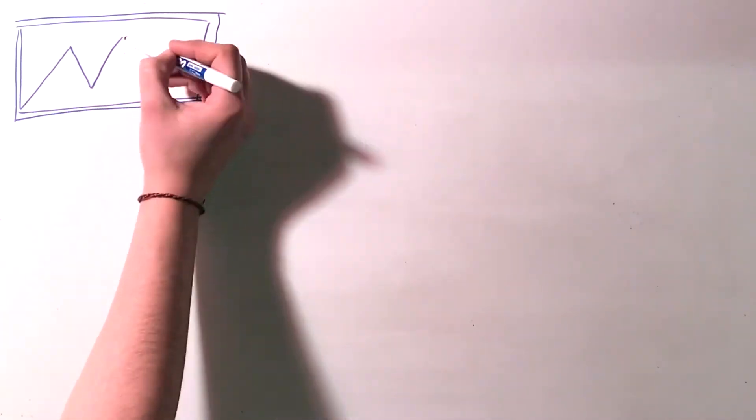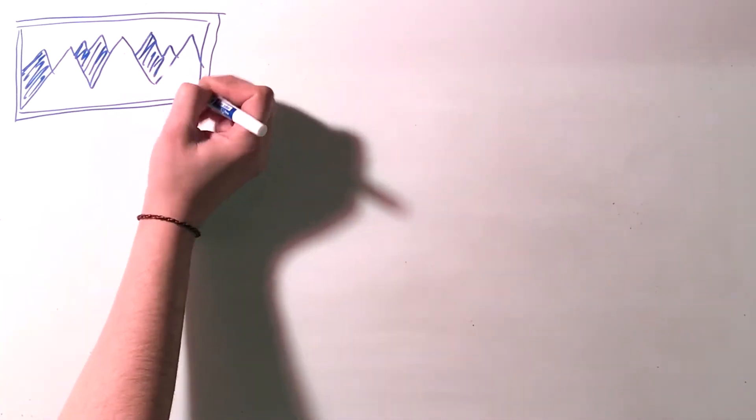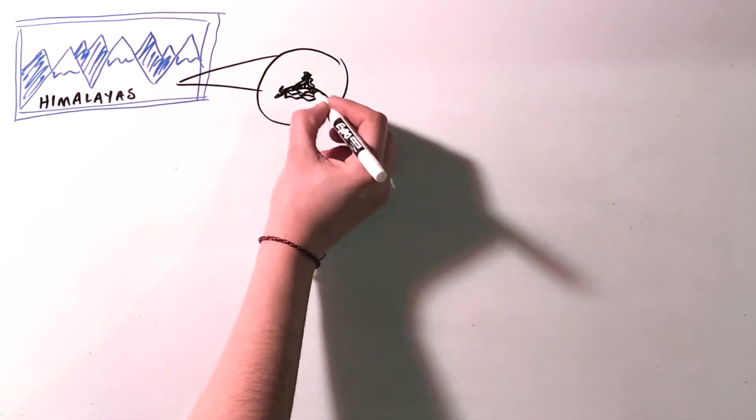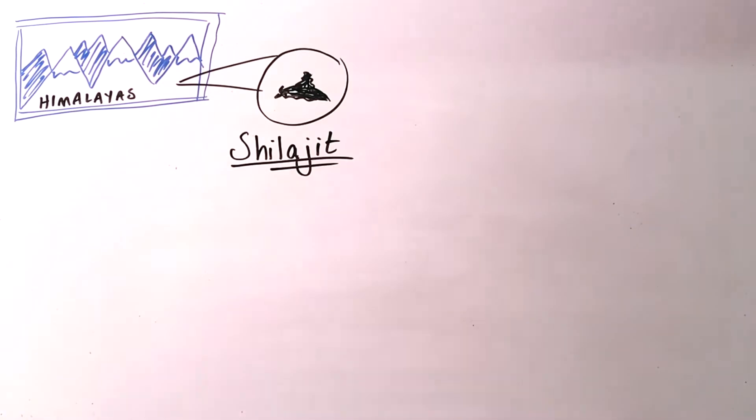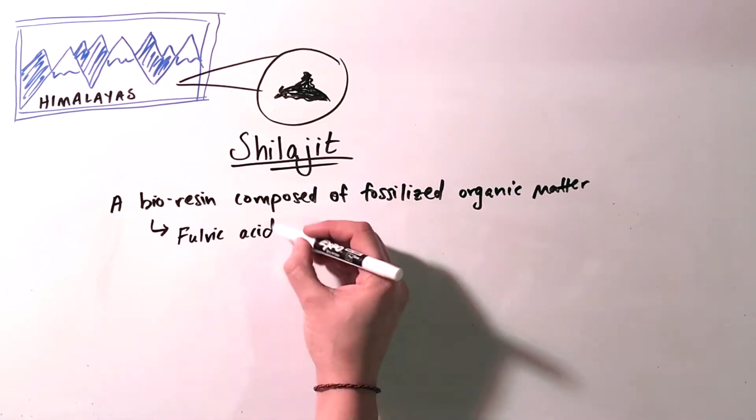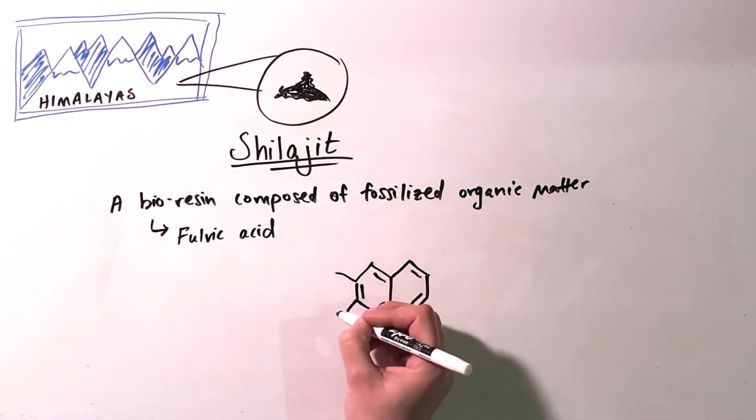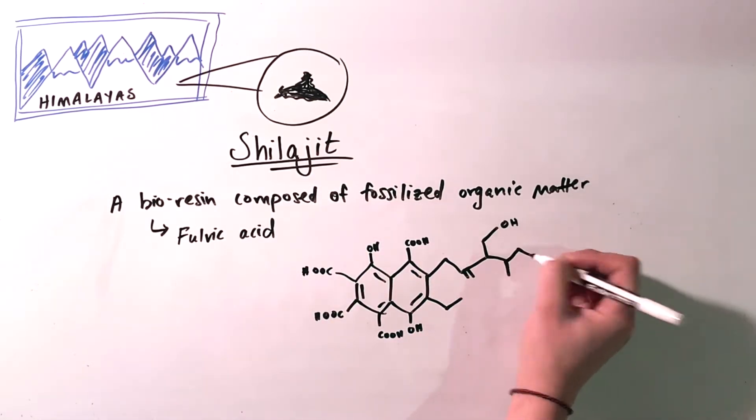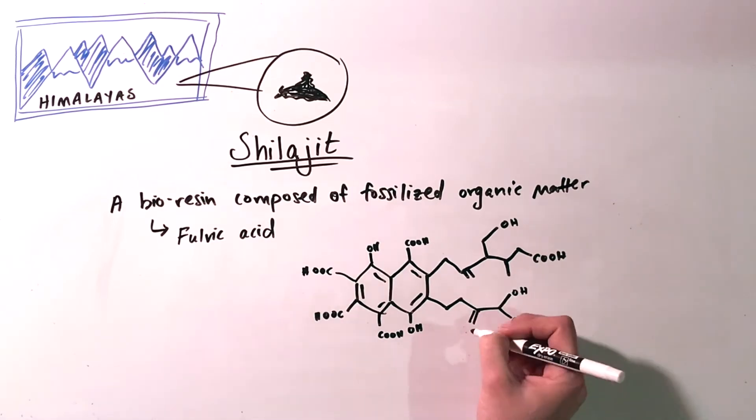Then how do we support our horse's mitochondria? The answer can be found in the Himalayas. In the late Triassic period, organic matter became trapped and compressed in the mountains. The resulting biomass resin is known as shilajit. Nutrient-dense shilajit is composed of humic and fulvic acids. It has been used in Ayurvedic medicine for over 3,000 years and science is beginning to take a closer look at why.